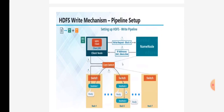Data node 1 will reply that it is ready with no issues and will start storing the data. Data node 1 will store block A and will further ask data node 4 if it is ready and has no issues. Data node 4 will say it has no issue. Data node 1 will then ask data node 6 to check if it can also store block A. DN6 will also reply that it is ready with no issues. So all three — data node 1, data node 4, and data node 6 — are in a ready condition.